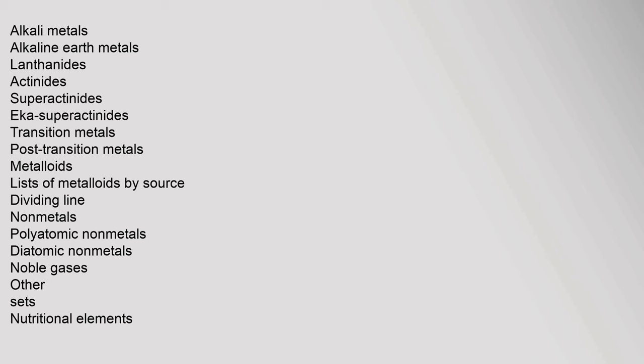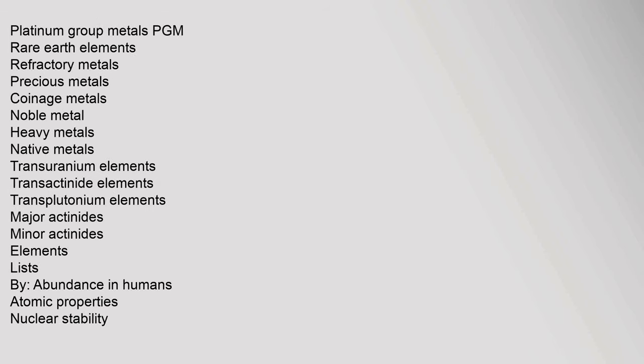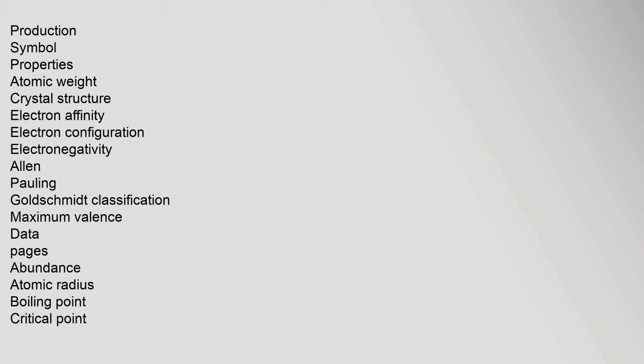By metallicity: metals include alkali metals, alkaline earth metals, lanthanides, actinides, superactinides, transition metals, post-transition metals, metalloids. Non-metals include polyatomic non-metals, diatomic non-metals, and noble gases. Other sets include nutritional elements, platinum group metals, rare earth elements, refractory metals, precious metals, coinage metals, noble metals, heavy metals, native metals, transuranium elements, transactinide elements, transplutonium elements, major and minor actinides. Element lists by abundance in humans, atomic properties, nuclear stability, production, symbol, atomic weight, crystal structure, electron affinity, electron configuration, electronegativity, Goldschmidt classification, and maximum valence. Data pages also cover atomic radius, boiling point, critical point, density, elasticity, electrical resistivity, hardness, heat capacity, heat of fusion, heat of vaporization, ionization energy, melting point, oxidation state, speed of sound, thermal conductivity, thermal expansion coefficient, and vapor pressure.